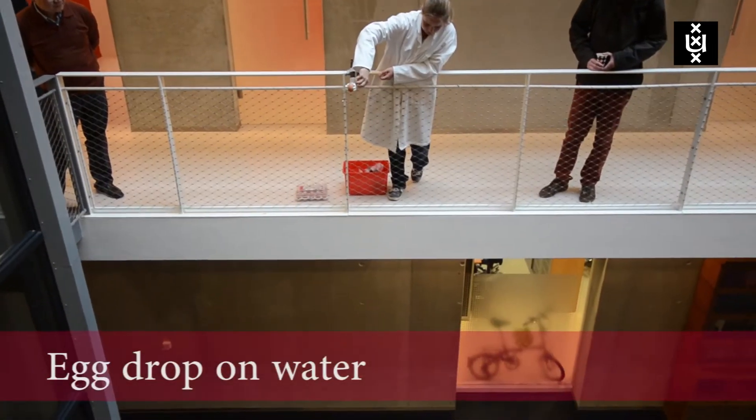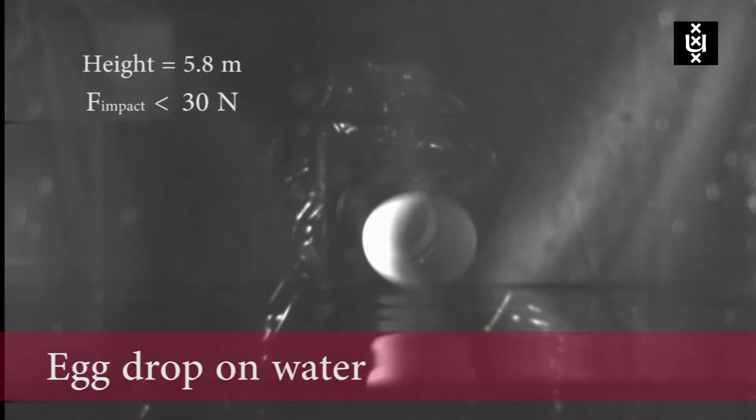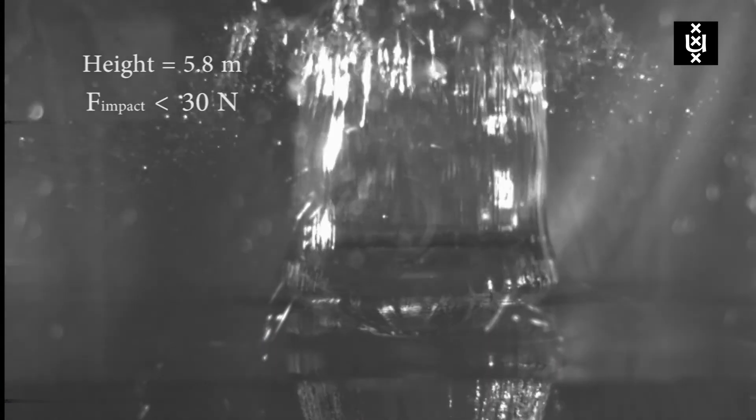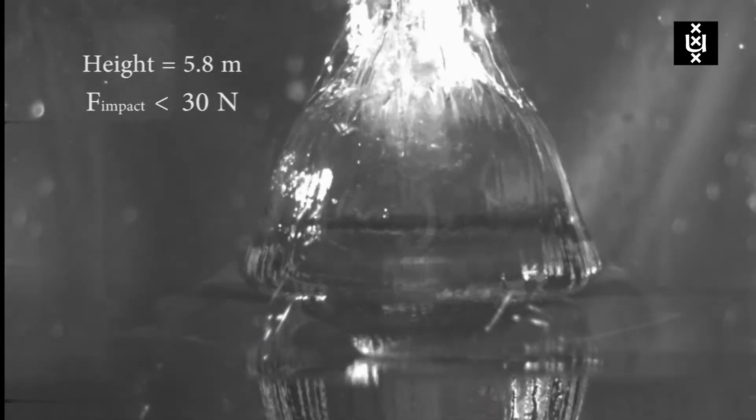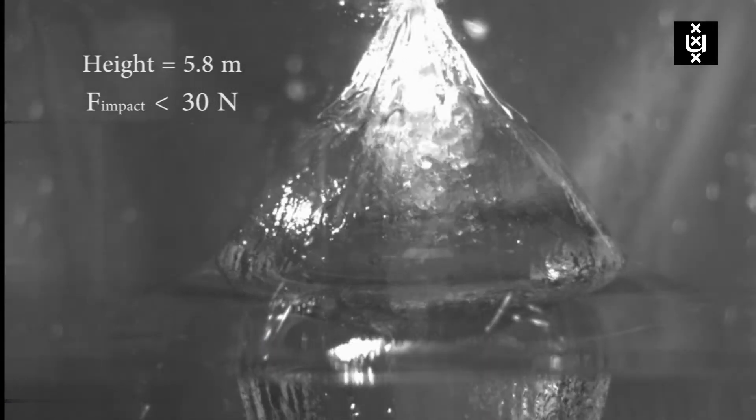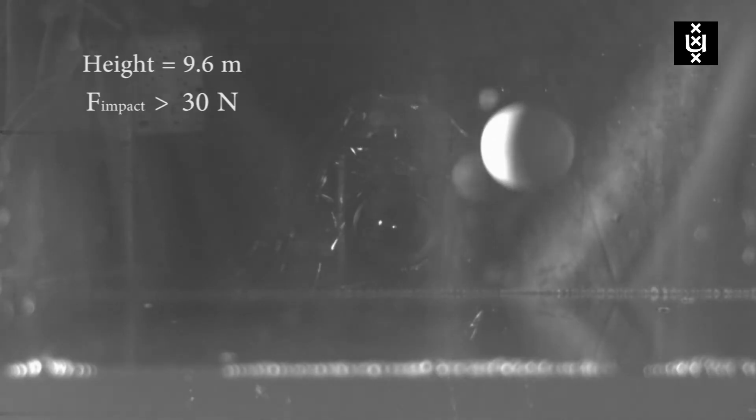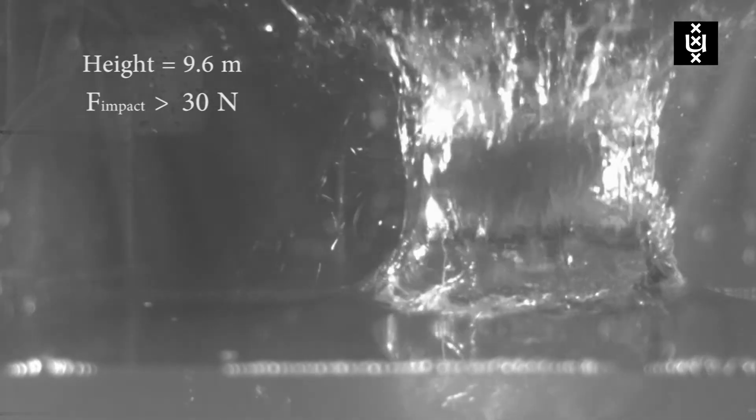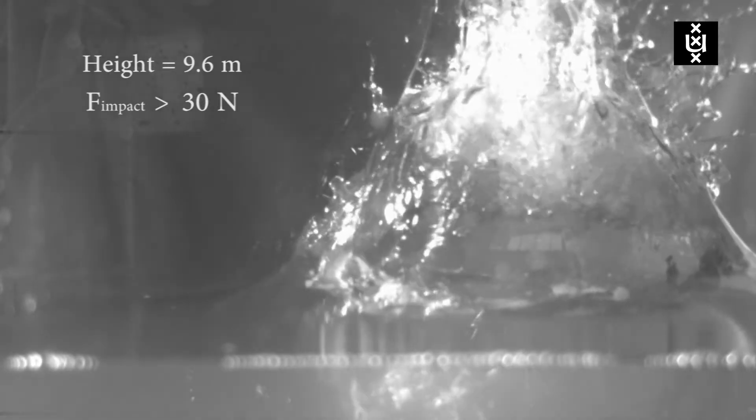Back to dropping eggs. At a height of 5.8 meters the force exerted onto an egg is lower than 30 newtons and the egg does not break. At a height of 9.6 meters the force is larger than 30 newtons and the egg does break.